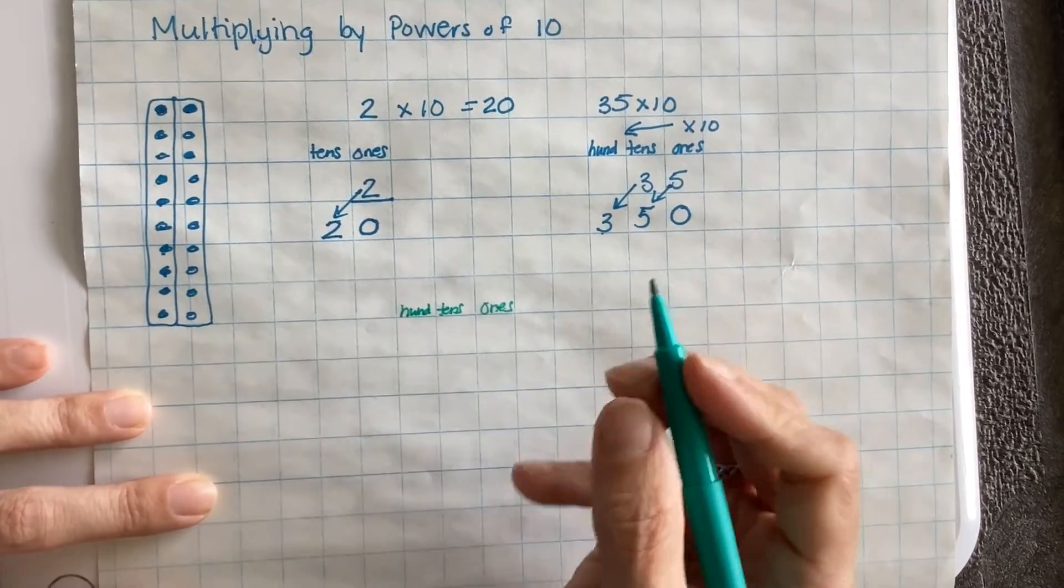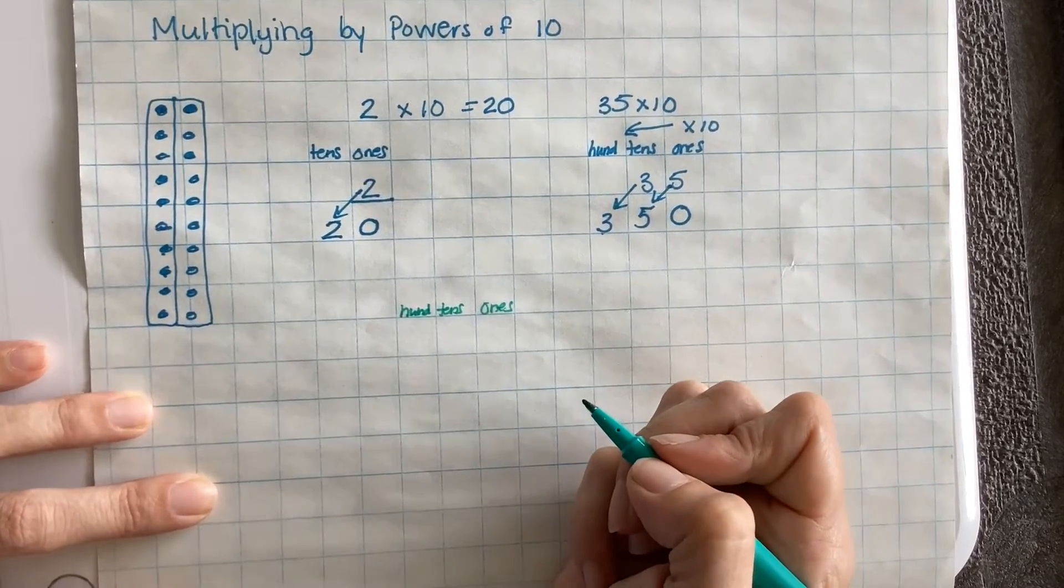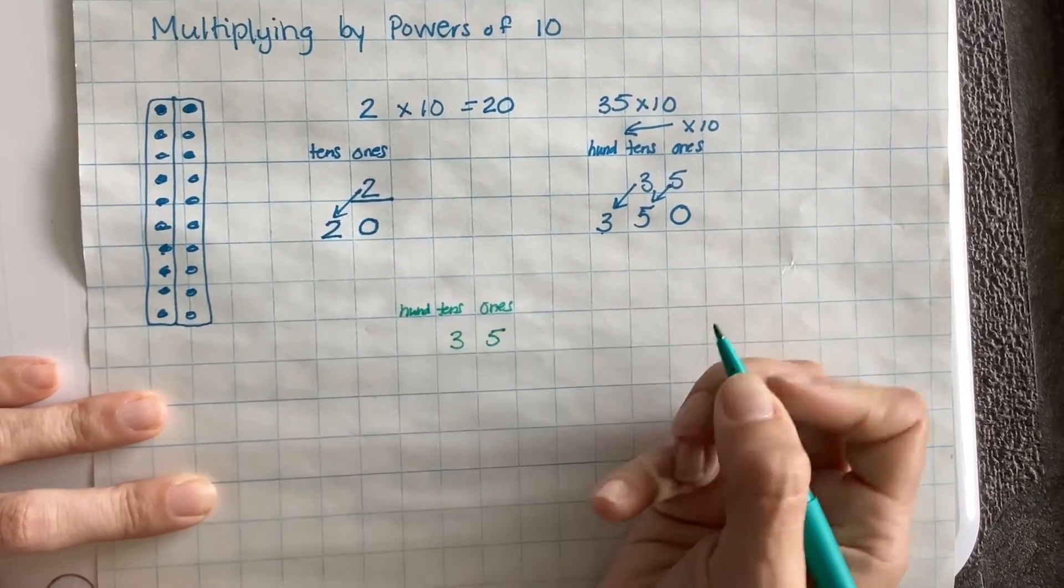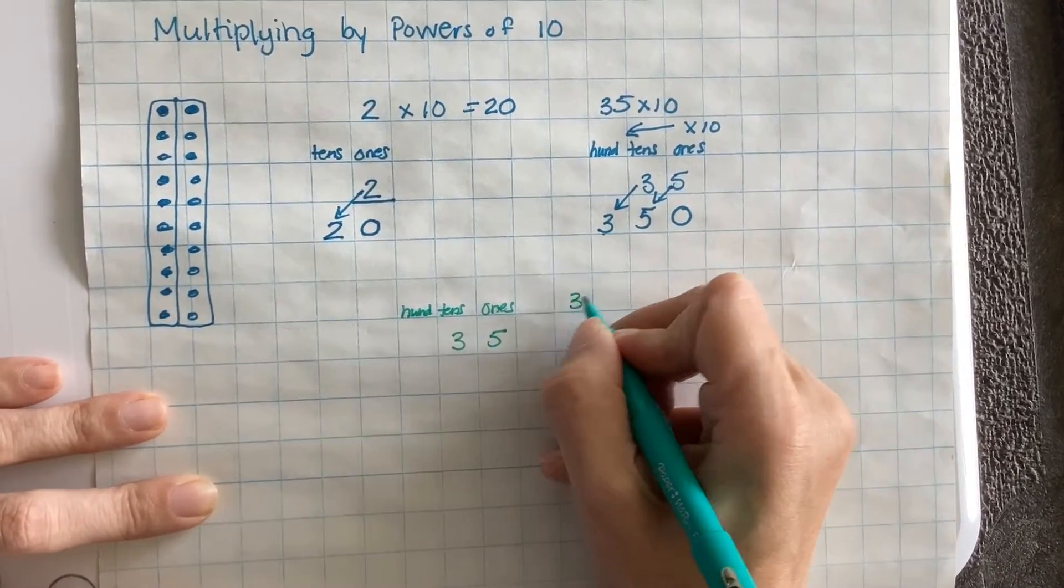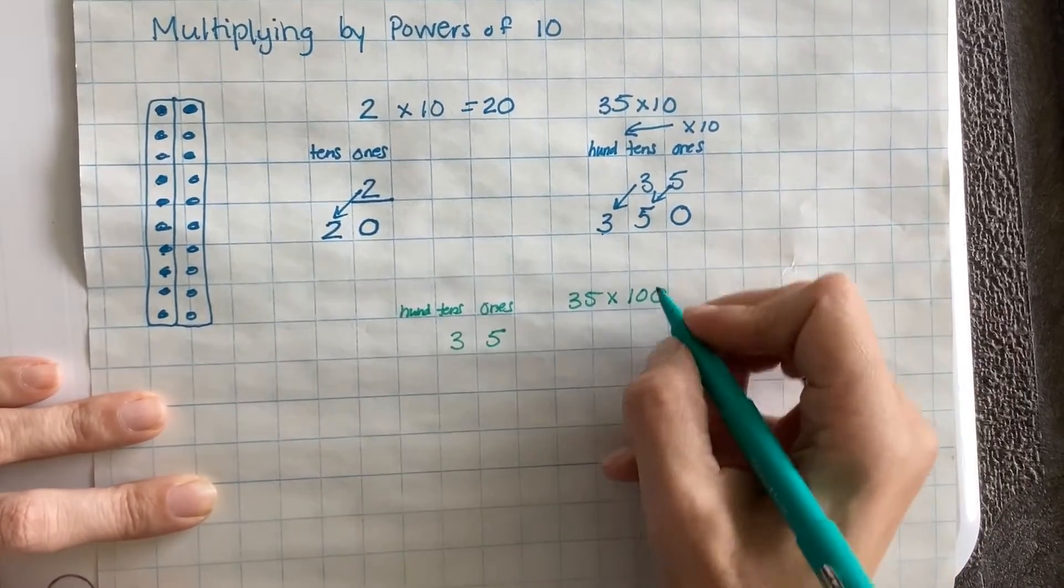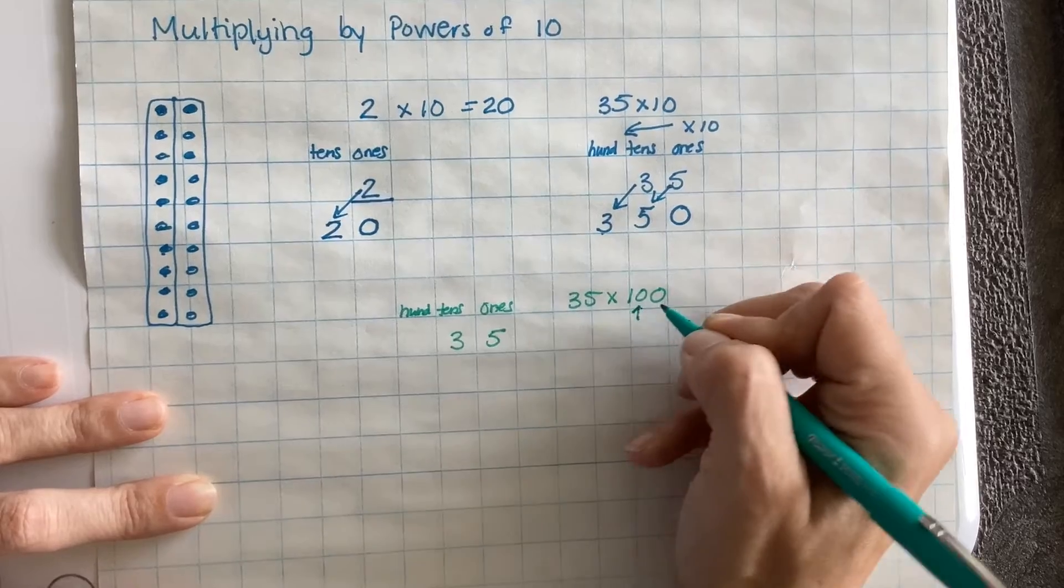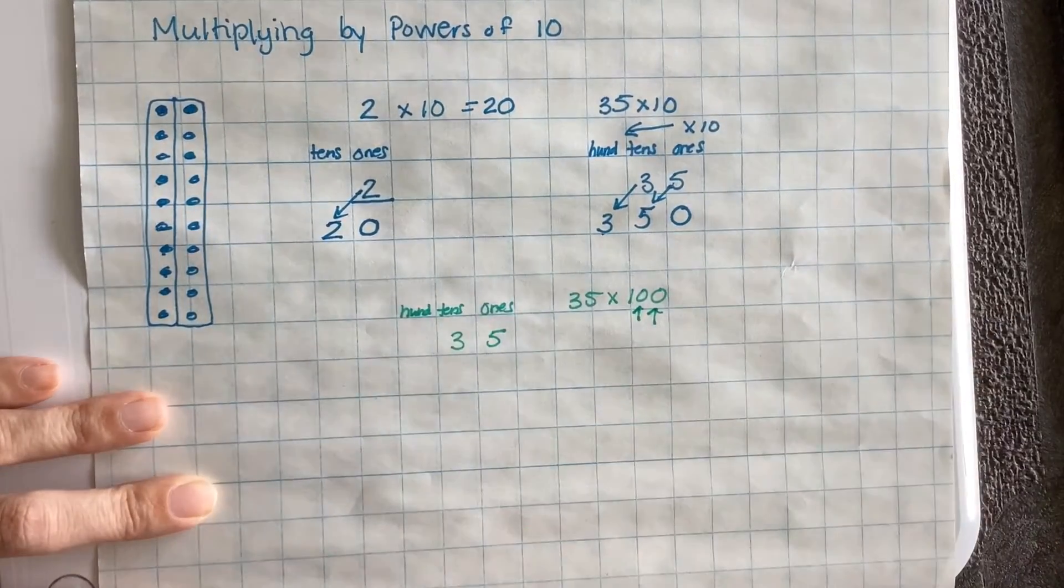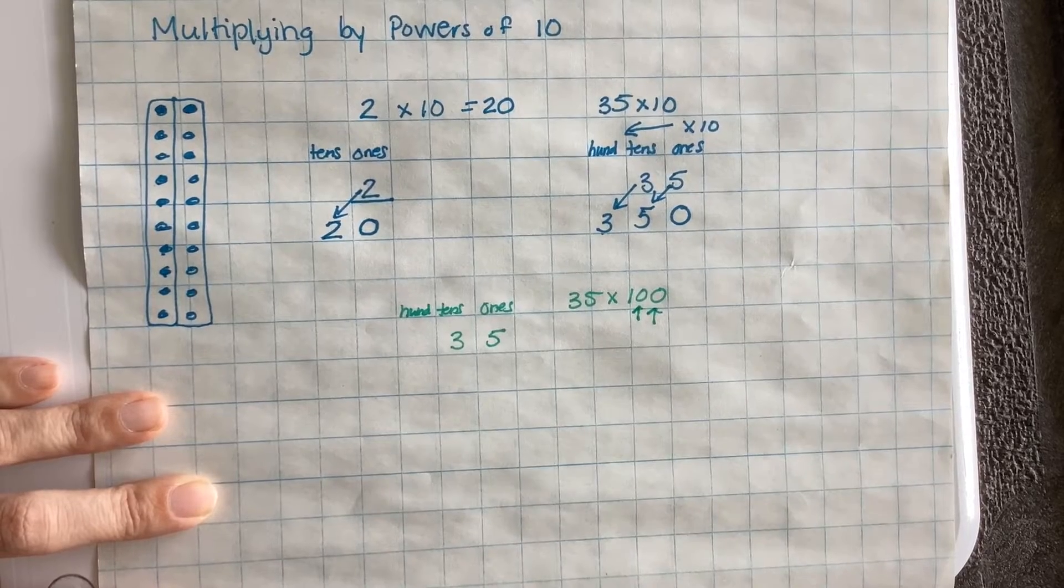And let's say that I want to multiply. I'm going to choose 35 again. And this time I'm going to do 35 times 100. Notice that instead of having 1 power of 10 here with a 0, I have 2 powers of 10 because I've multiplied by 10 and by 10 again.